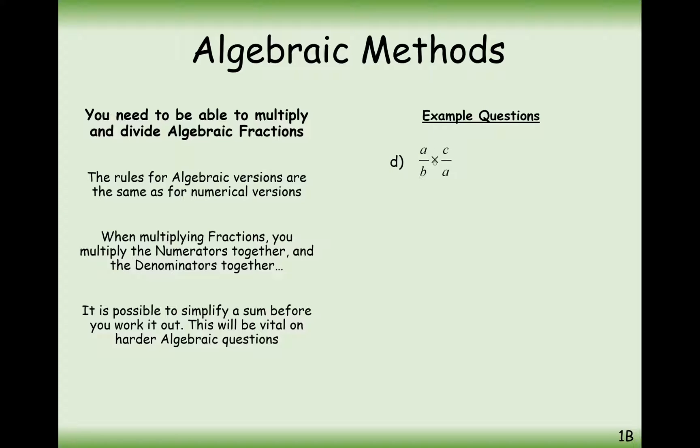So for example, if we've got A over B times C over A, we think about these two A and C swapping over. We don't swap them over. All we do is we cancel them out to leave us just with C over B.